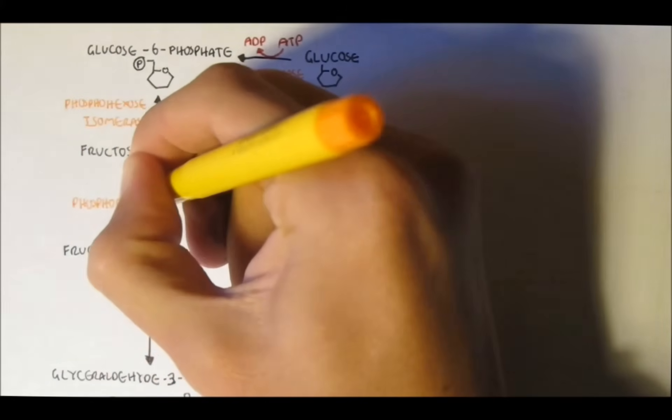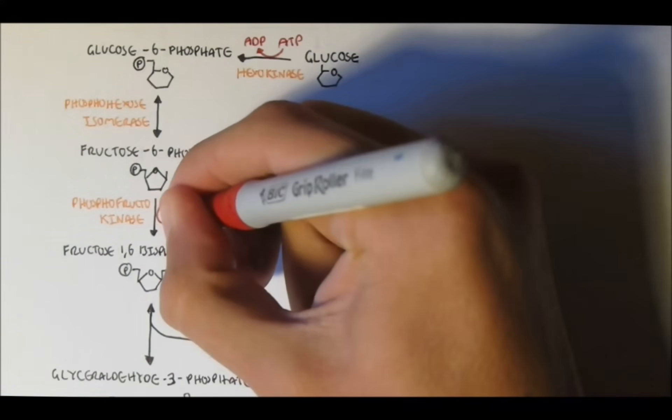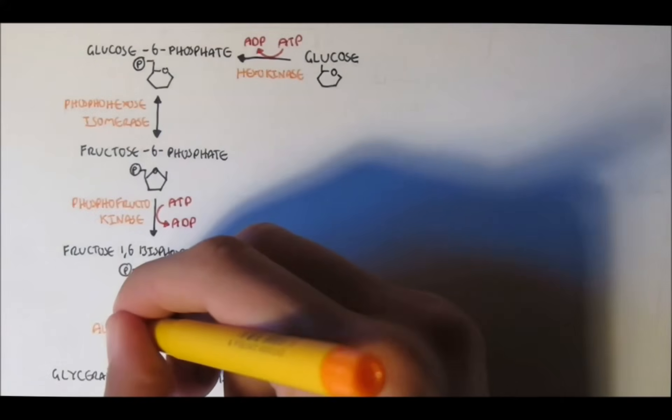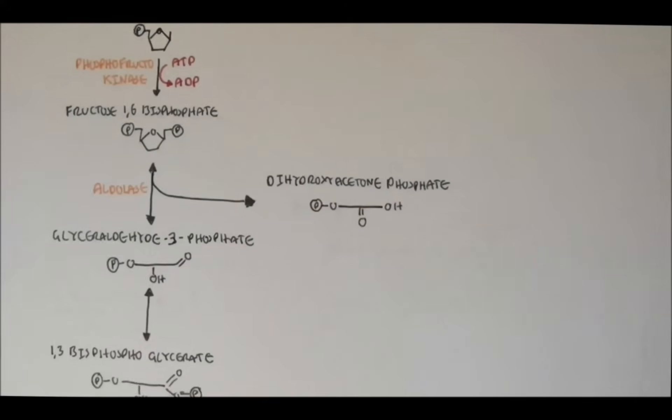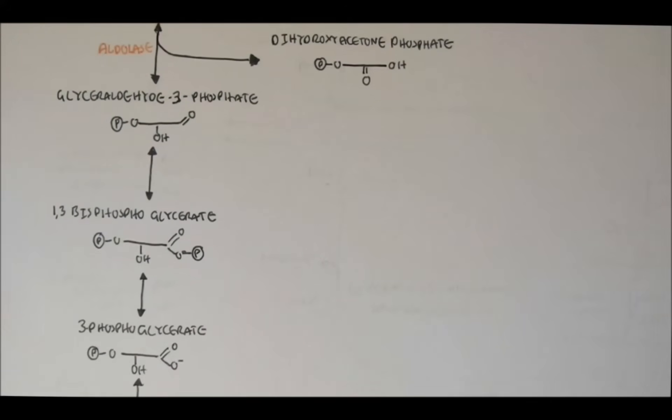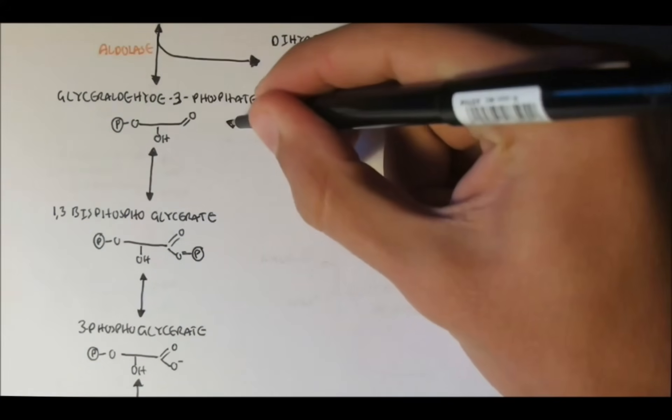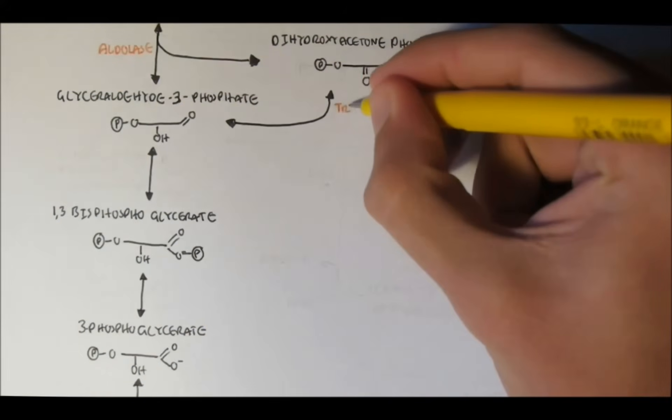Fructose-6-phosphate with the enzyme phosphofructokinase will get a phosphate from ATP again and form fructose-1,6-bisphosphate. Now this reaction is irreversible. Then fructose-1,6-bisphosphate will split in half with the enzyme aldolase to form glyceraldehyde-3-phosphate and dihydroxyacetone phosphate. This reaction is reversible. Dihydroxyacetone phosphate and glyceraldehyde-3-phosphate can convert back to each other with the enzyme triose-phosphate isomerase because both these molecules are isomers of each other.